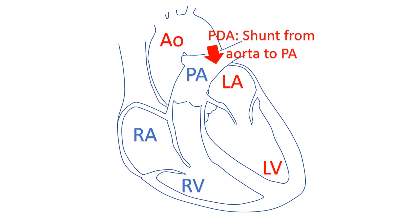This diagram illustrates a left-to-right shunt across a patent ductus arteriosus. Normally, the ductus arteriosus, which is present in the fetus, closes soon after birth because of higher oxygen saturation when the lungs start functioning. The strongest stimulus for constriction of a mature ductus is oxygen. The ductus arteriosus in a premature infant does not respond as well to oxygen, and that is why the incidence of PDA is higher in preterm infants.